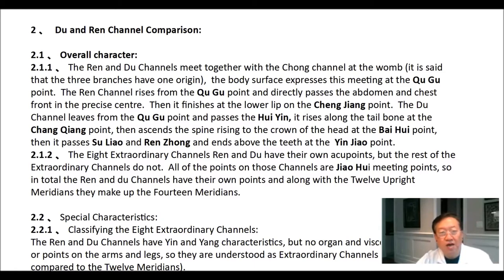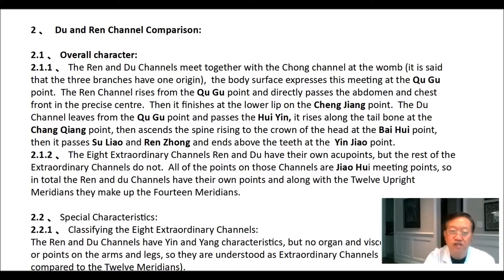The du channel leaves from the chu gu point and passes the hui yin. It rises along the tailbone at the chang jiang point, then ascends the spine, rising to the crown of the head at the bai hui point. Then it passes su liao and ren zhong and ends above the teeth at the yin jiao point. The 8 extraordinary channels — ren and du — have their own acupoints, but the rest of the extraordinary channels do not. All acupoints on those channels are jiao hui meeting points. The ren and du channels, along with the 12 upright meridians, make up the 14 meridians.